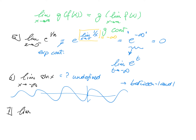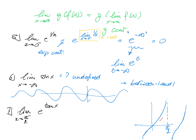Calculate the limit of e to the power tangent x, with x going to pi over 2 from the negative side. Looking at the tangent function, we know that pi over 2 is a vertical asymptote, and approaching from the left the limit of tangent x goes to plus infinity. Since e is continuous, this is e to the power of the limit of tangent x as x approaches pi over 2 from the left, giving e to the power plus infinity, or the limit of e to the power t for t going to plus infinity, which is plus infinity.